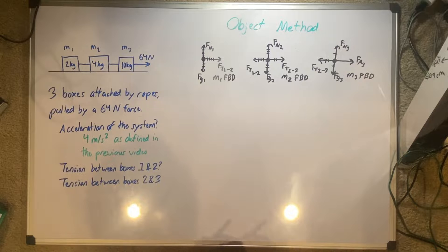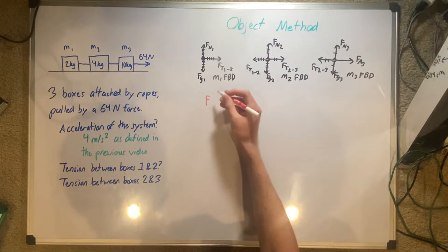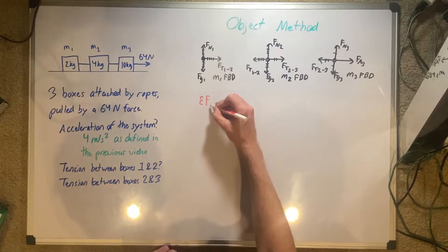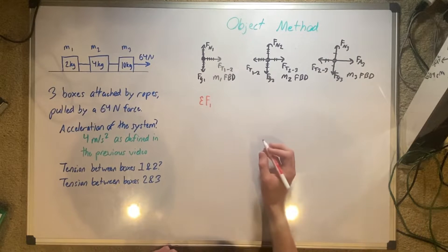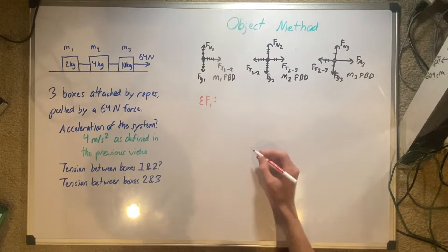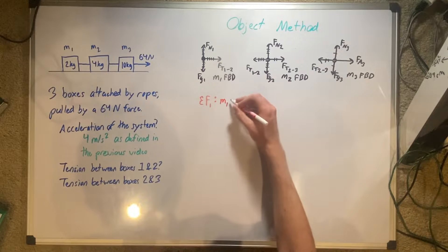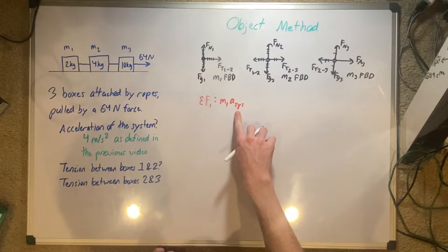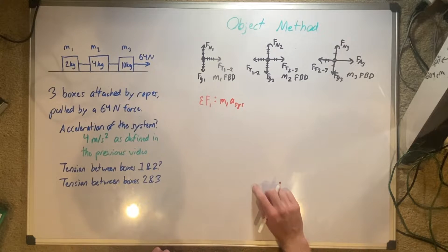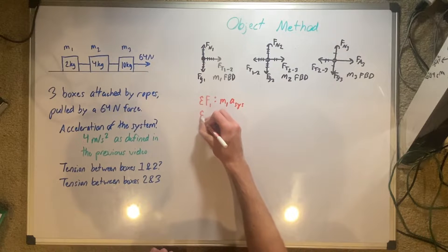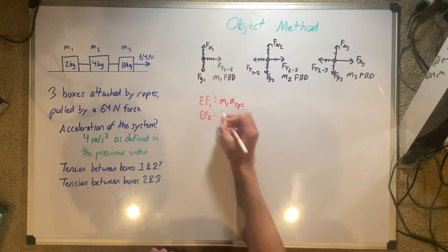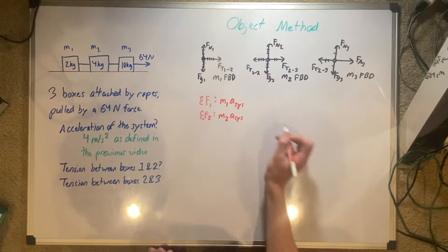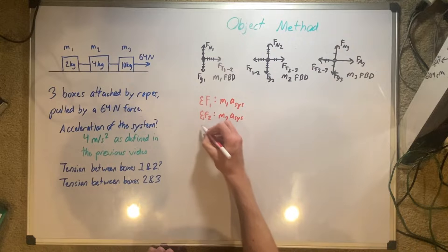Now, sum of forces time. Sum of forces in just box number 1. First of all, we have mass 1, acceleration of the system. Why it's not acceleration of just 1 is because the entire system moves as a whole. We're going to do sum of forces 2 equals mass 2 acceleration of the system. Same reason I just said earlier.